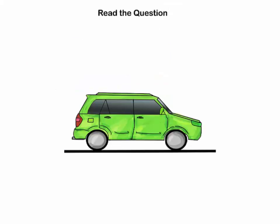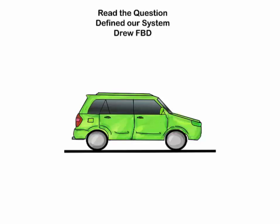Before we continue, let's review what we've done so far. We read the question, this is always very important. Then we defined our system. And then we drew our free body diagram. Next, we defined the forces doing work using the work energy theorem. In this case, we had non-conservative forces such as rolling friction, drag, and the work of the engine, which we said is the same as the work of the ground.